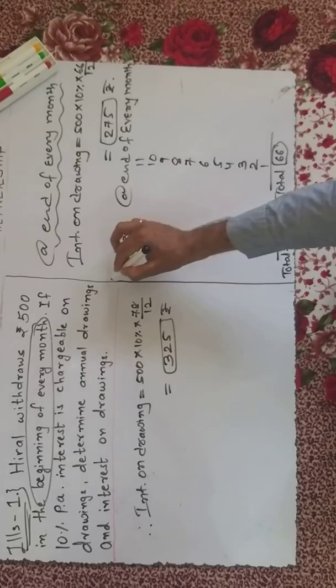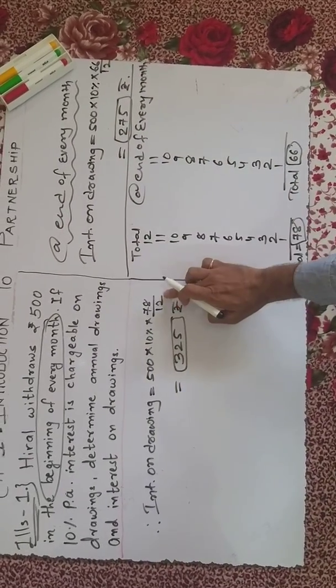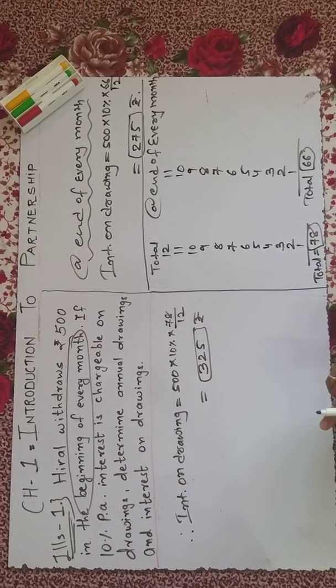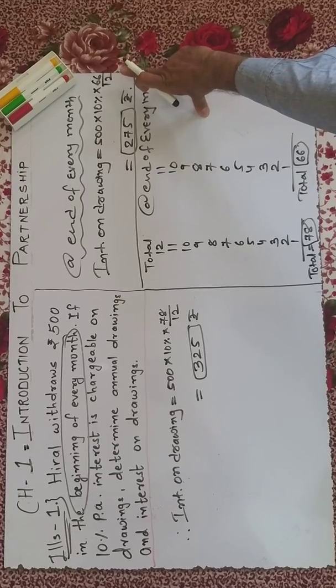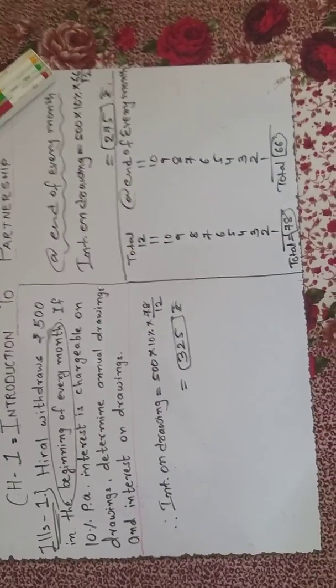So in the calculation, the last month has remaining days. November's money you understand. I'm just explaining directly: you just need to remember 78 upon 12 whenever it's beginning of every month, and 66 upon 12 at the end of every month. That's clear.